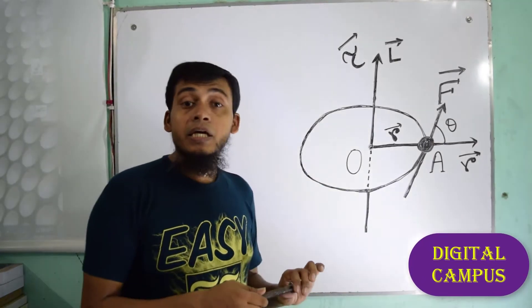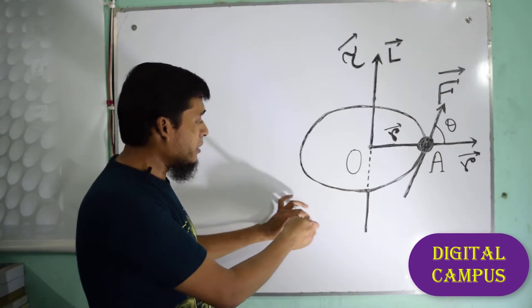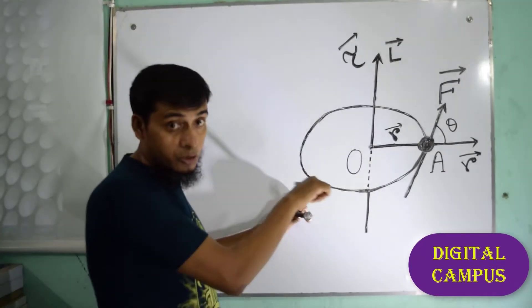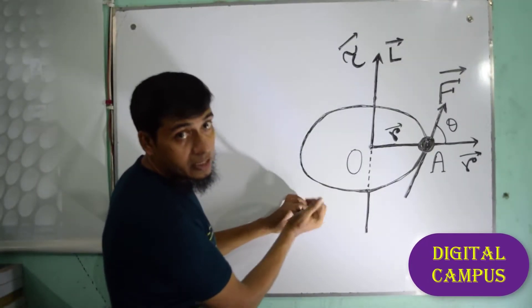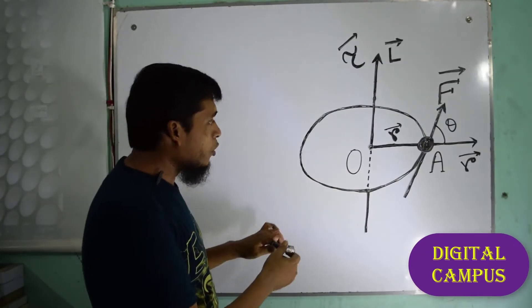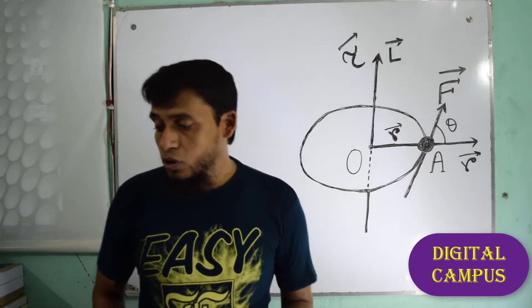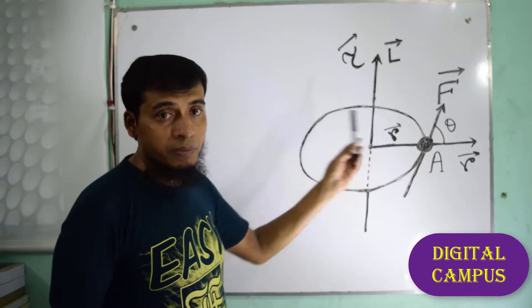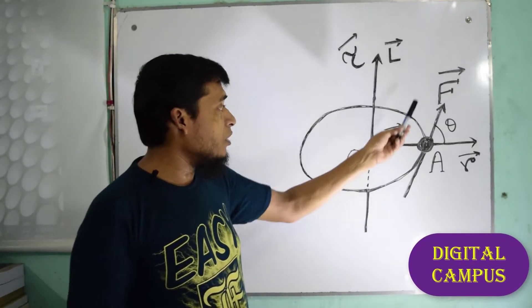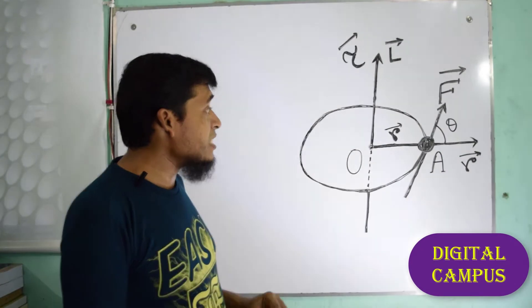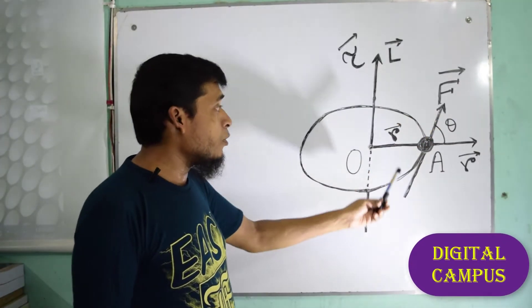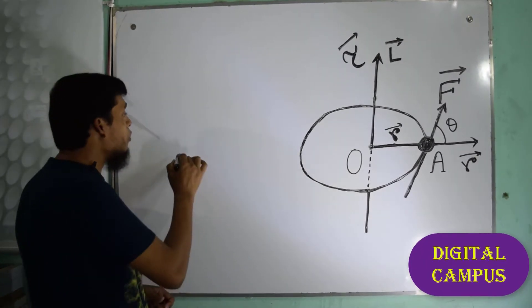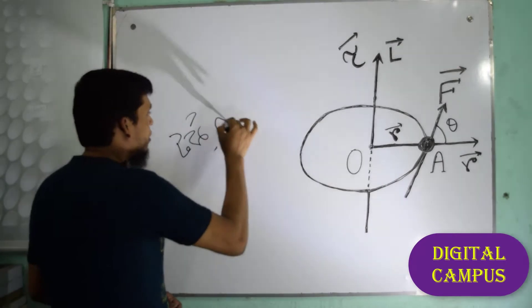Now, let us consider this with a practical wall example. We will take a point at the center and understand the concept of how an object rotates around that center point, and the direction associated with it.